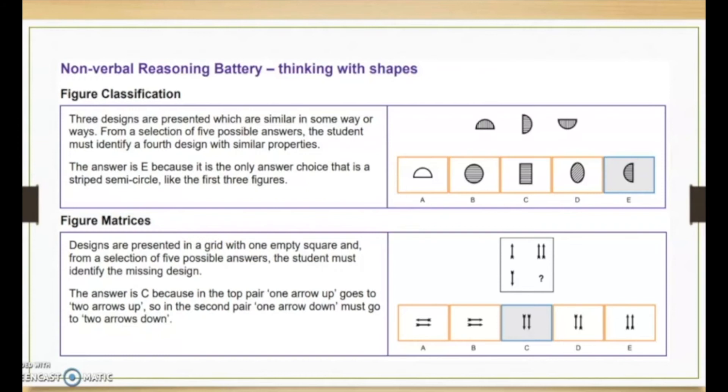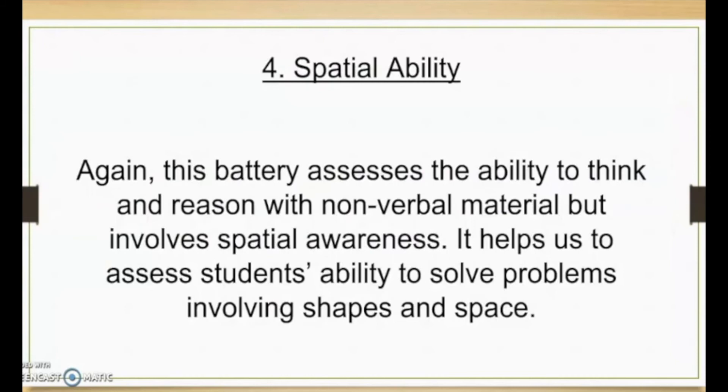So when we look at that it makes sense that that's the next one that would match those or come in the sequence. Then down to the figure matrices. Designs are presented in a grid with one empty square and from a selection of five possible answers the student must identify the missing design. So the answer here is C because in the top pair one arrow up goes to two arrows up, so in the second pair one arrow down must go to two arrows down, which makes sense.